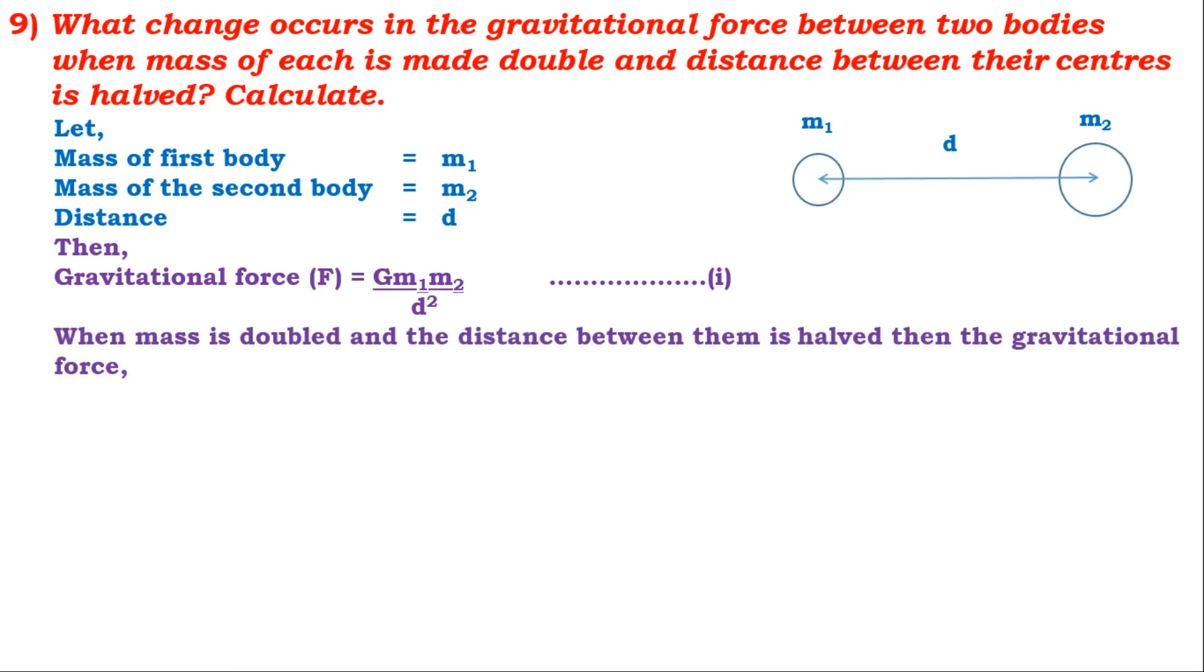When mass is doubled and distance is halved, then the new gravitational force F_new = G × 2M1 × 2M2 / (D/2)².